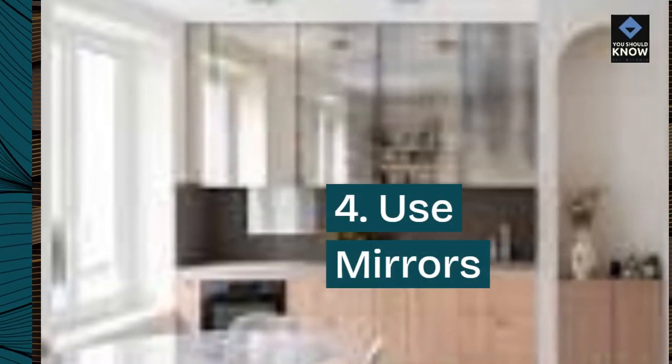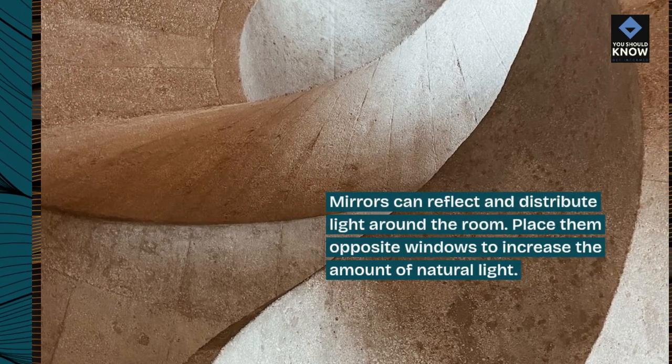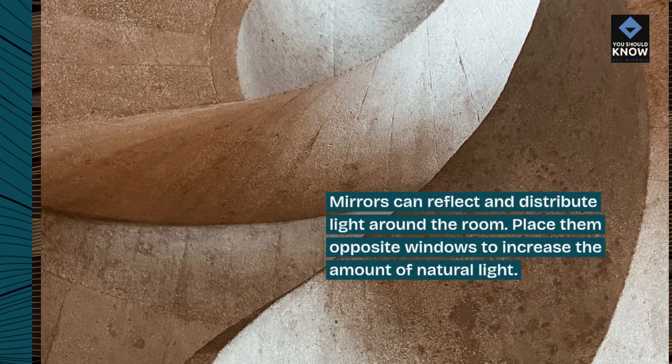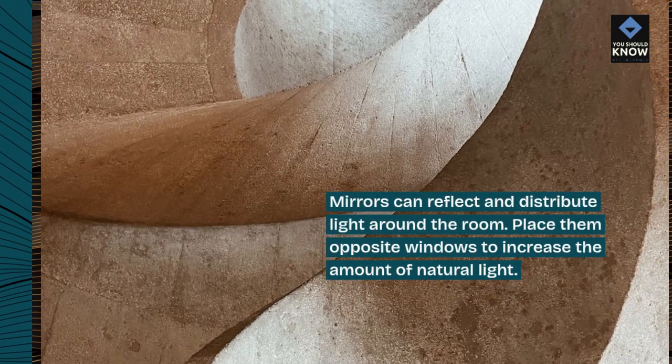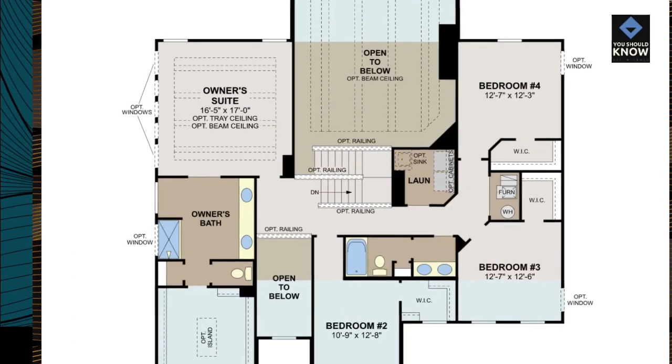4. Use mirrors. Mirrors can reflect and distribute light around the room. Place them opposite windows to increase the amount of natural light.